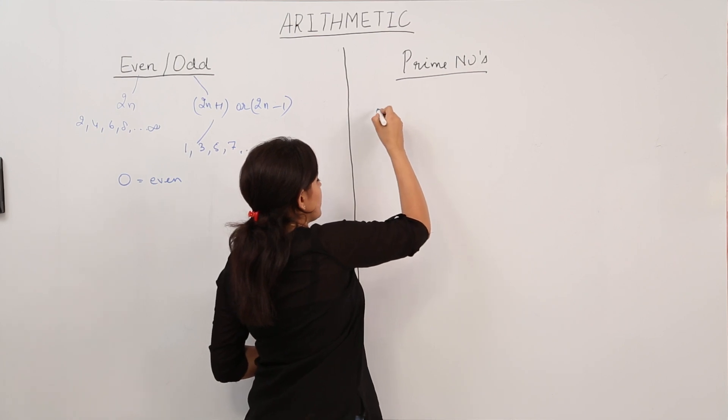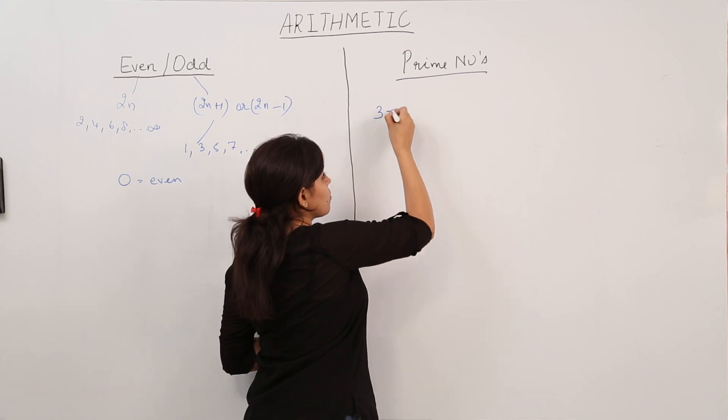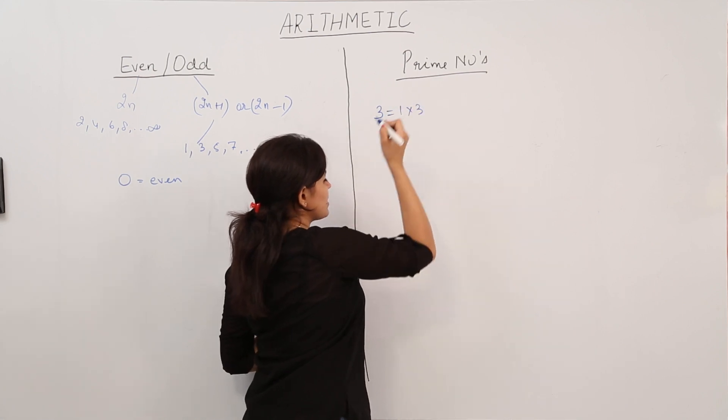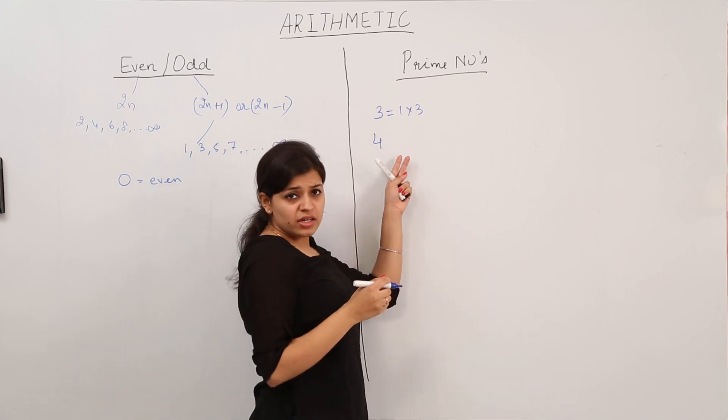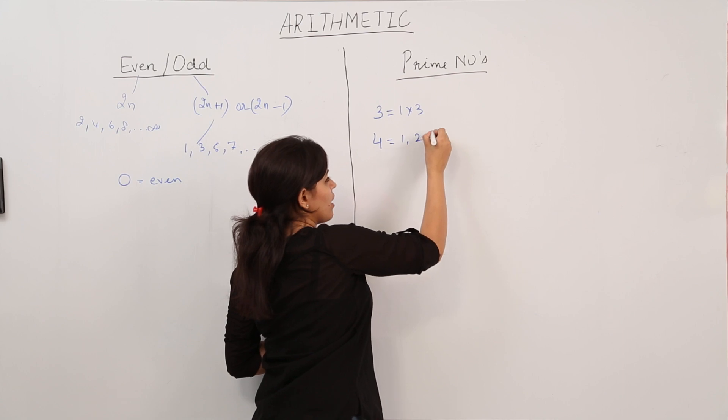Let's say we have the number 3. So we can say that the factors of 3 are 1 and 3. Let's take the number 4. We can say that the factors of 4 are 1, 2, and 4.